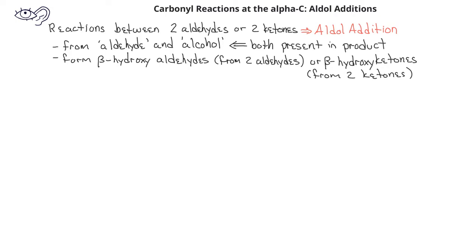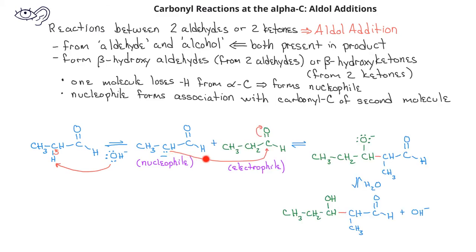In aldol additions, one molecule will lose a hydrogen from the alpha carbon to create a nucleophile. This nucleophile will then form an association with a carbonyl carbon, which is partially positive charged, on a second molecule.